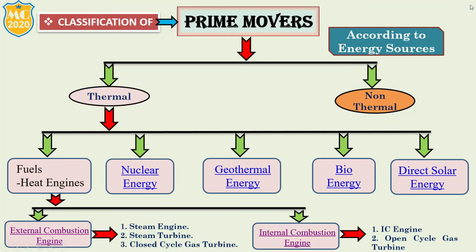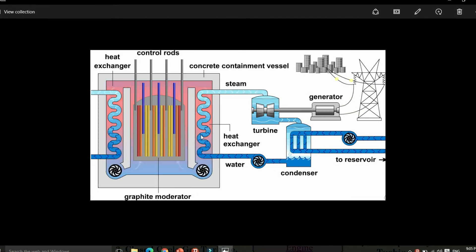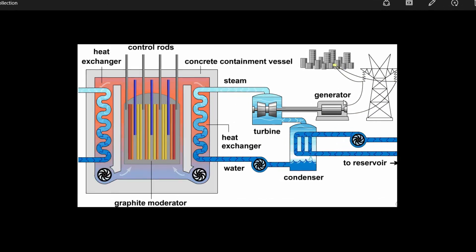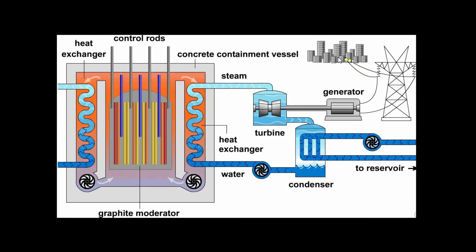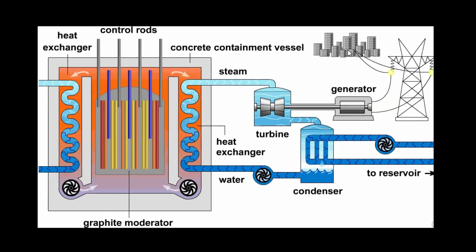Next we understand nuclear energy. In nuclear energy, heat is used to generate steam that drives a steam turbine connected to a generator that produces electricity. Here the steam and turbine are connected to the generator, and this generator produces electricity. This is the best example of a nuclear prime mover.